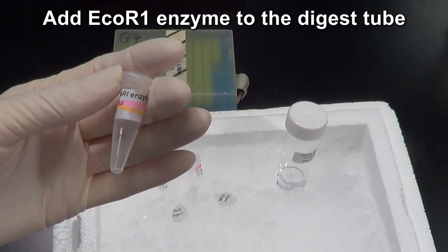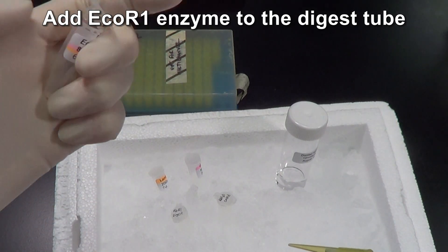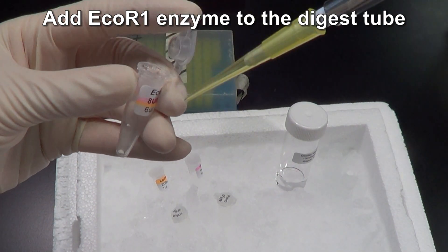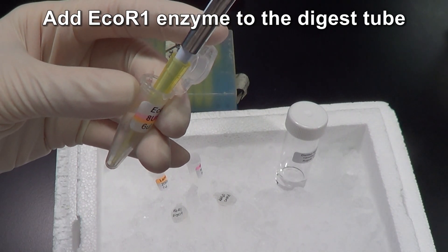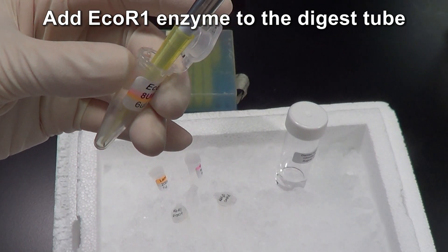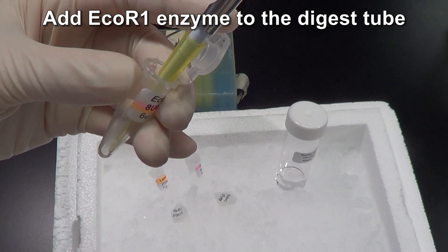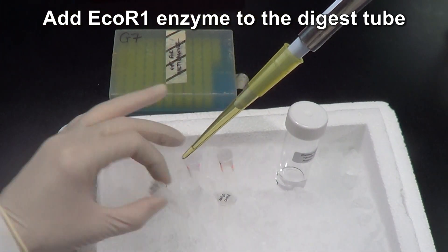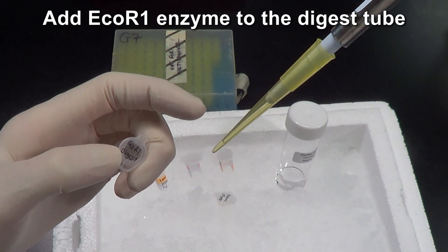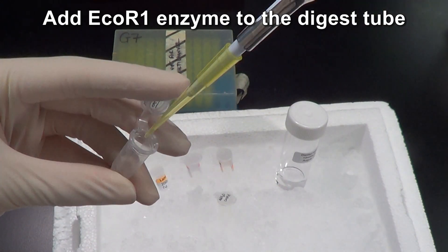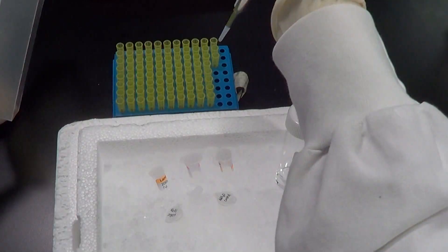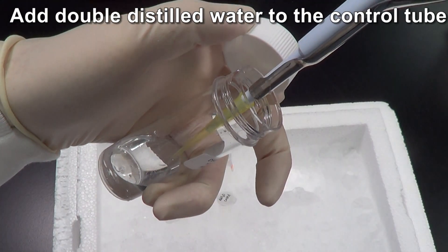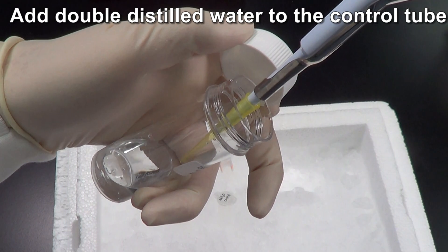Add EcoR1 enzyme to the digest. Add an equal volume of distilled water to the control tube.